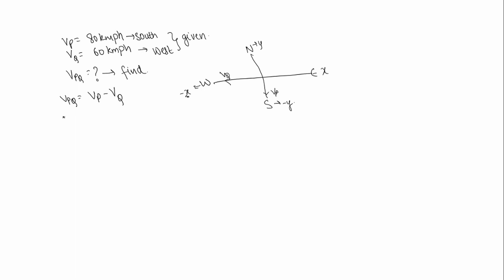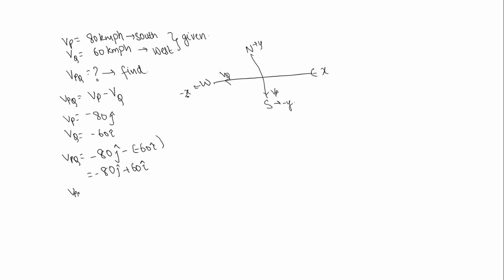Velocity of P equals minus 80 j-cap because it is in the negative y-axis, and velocity of Q is minus 60 i-cap because it is in the negative x-axis. So velocity of P with respect to Q equals minus 80 j-cap minus of minus 60 i-cap, which gives minus 80 j-cap plus 60 i-cap.